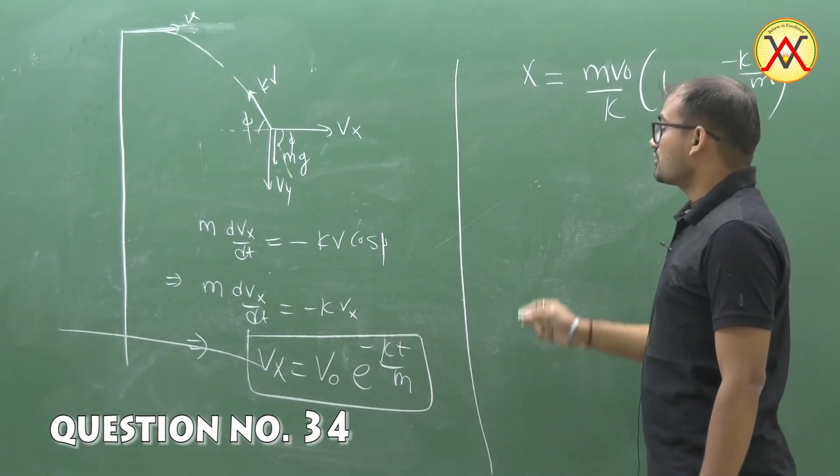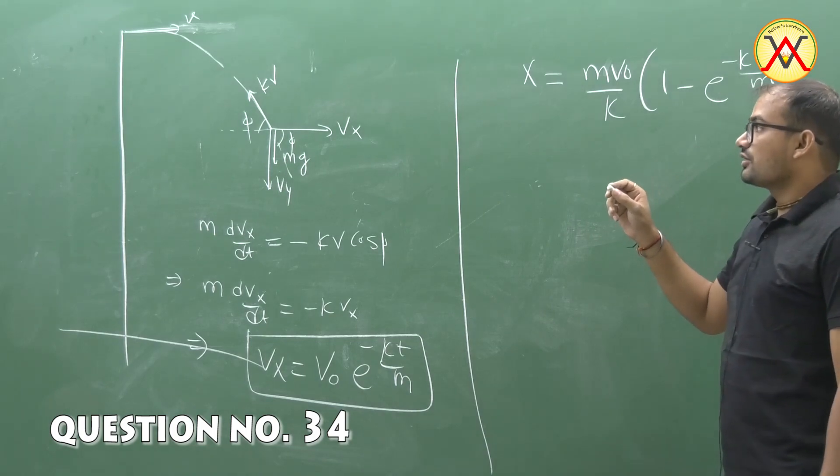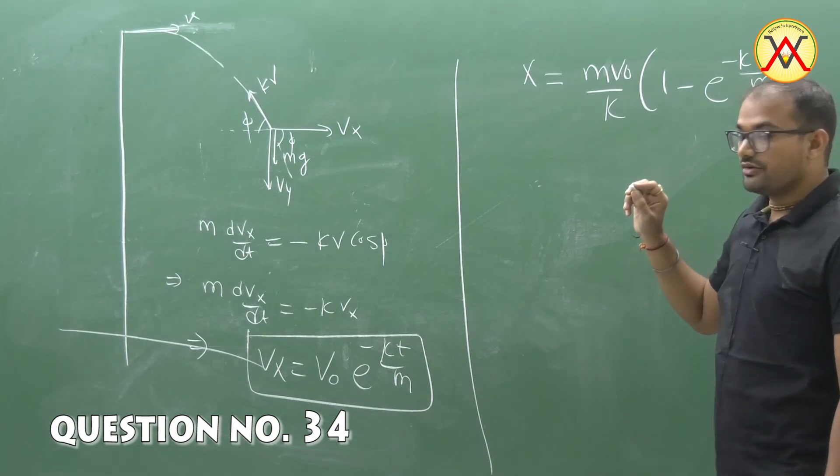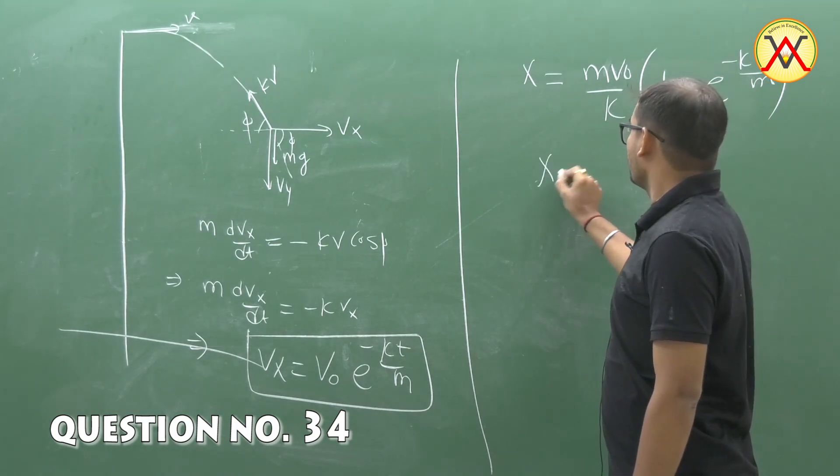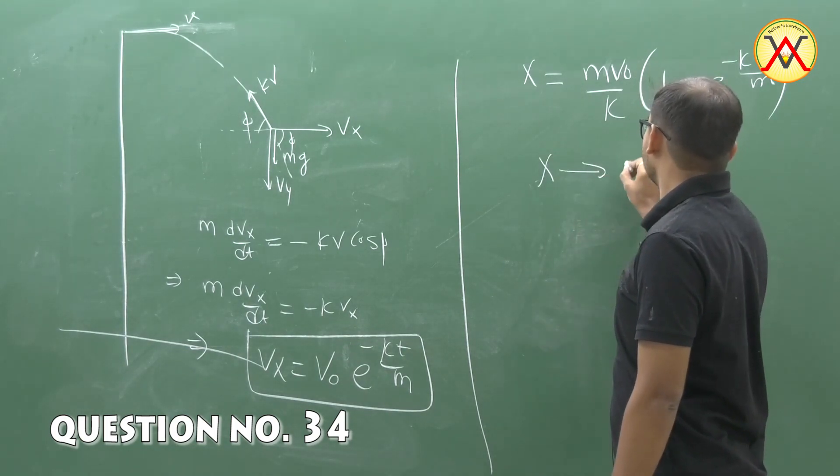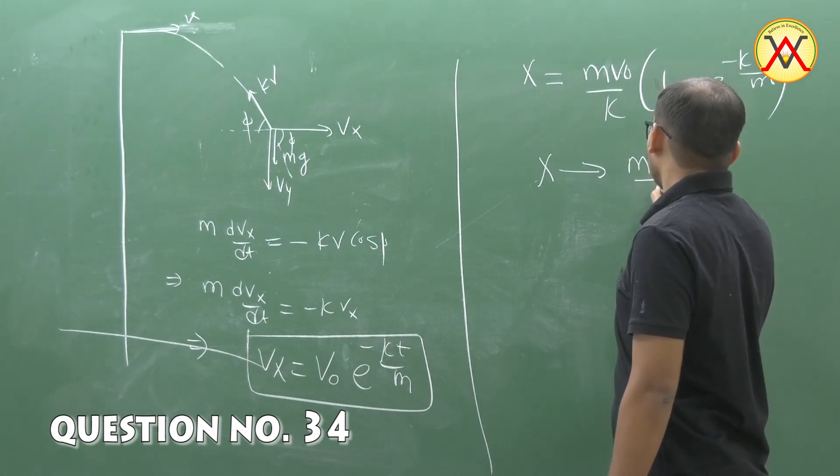As the tower is given a tall tower, we can say after some time x will tend towards mv0 by k.